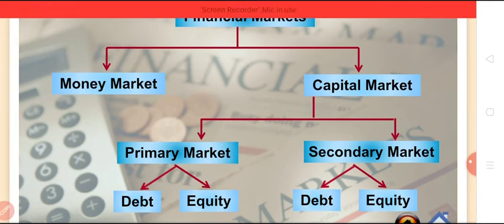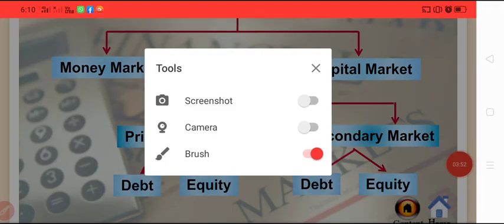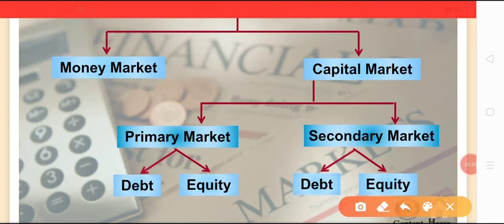For the students, capital market has two further segments: primary market and secondary market. Primary market is a market where securities are issued for the first time. This market is also known as New Issue Market or NIM. So, primary market is a market for issuing new instruments and not existing securities.